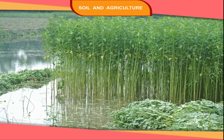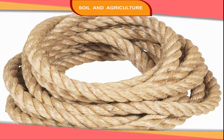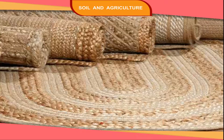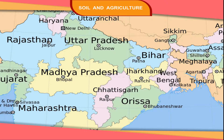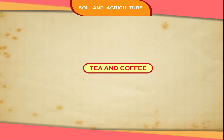Jute is called the golden fibre of India. It is used to make ropes, bags and carpets. West Bengal, Bihar and Orissa are the main producers of jute.